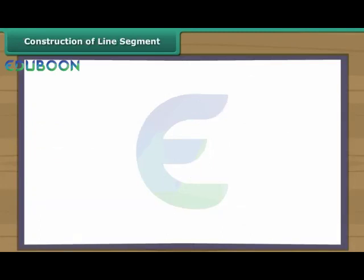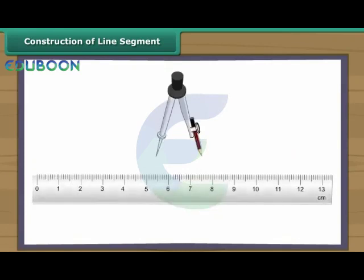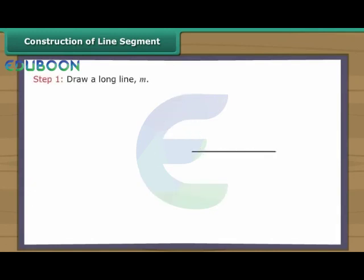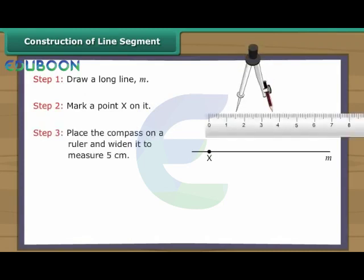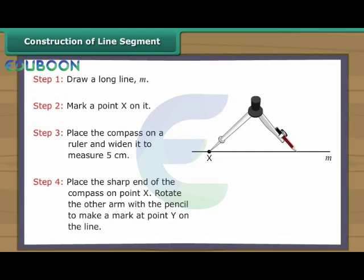Construction of Line Segment. A line segment is a measurable part of a line with two definite end points. We use a ruler and a compass to construct a line segment. Let us construct a line segment five centimetres long. Draw a long line M. Mark a point X on it. Place the compass on a ruler and widen it to measure five centimetres. Place the sharp end of the compass on point X. Rotate the other arm with the pencil to make a mark at point Y on the same line. We have a line segment XY which is five centimetres long.